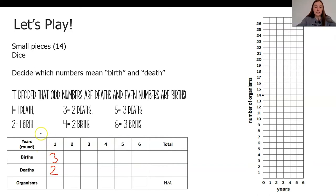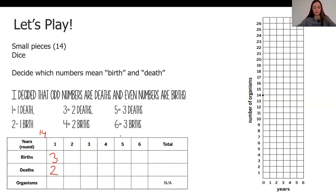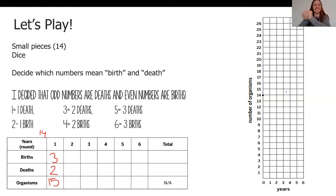I started with 14 tokens in the center. So I'm going to add my three tokens for the three births, but I also have to take out two tokens for the deaths. That evens out to 15 organisms. I'm going to add that in my table. Let's go again.